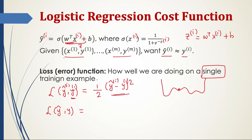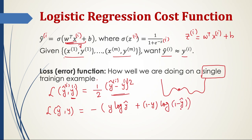In logistic regression, the loss function we will use — omitting the superscript for a single training example — is: negative of y times log of y-hat, plus 1 minus y times log of 1 minus y-hat. We always want the loss function to be as small as possible. If the actual label y is 1, we want the predicted value to also be close to 1.